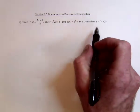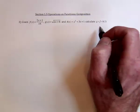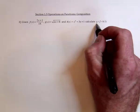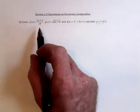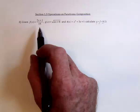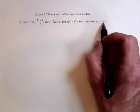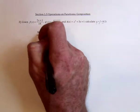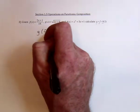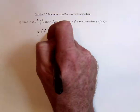Here we've got the composition of functions, and for triple the fun we've got the composition of three functions: g, f, and h. We start with the innermost function, which is h. Composition means that you substitute one function value into another function.